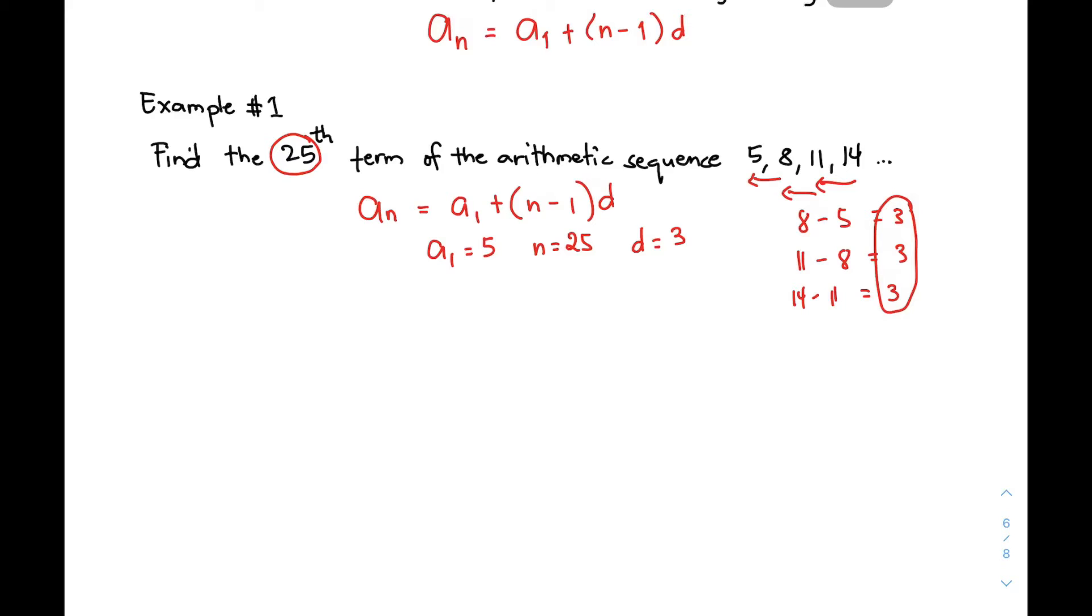After completing those variables or the value of those variables, kailangan mo nang ipalita ito sa given formula natin. Since your n = 25, ito magiging a₂₅. And then, your a₁ is 5 plus your n, which is 25, minus 1 times your common difference, 3. Then, simplify the given formula. a₂₅ = 5 + (24)(3). Then, multiply 24 times 3.